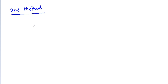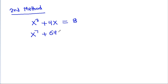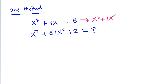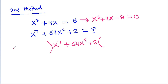We have x cubed minus 4x is equal to 8, then x to the power 7 minus 64x squared minus 2 is equal to what? From here, we can get x cubed minus 4x minus 8 is equal to 0. And if we divide x to the power 7 minus 64x squared minus 2 by x cubed minus 4x minus 8,